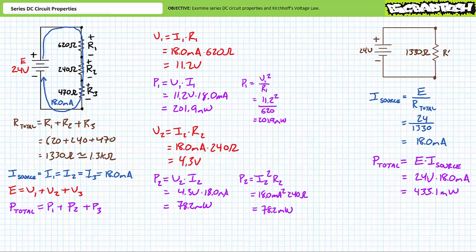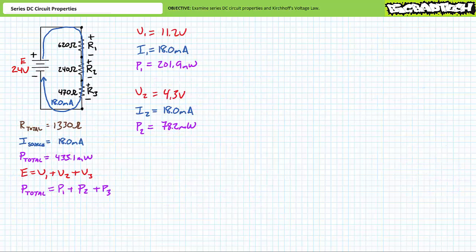As we predicted, the voltage dropped across the largest resistor R1 is indeed larger than the voltage dropped across the smaller resistor R2. Similarly, the power dissipated by the larger resistor R1 is indeed larger than the power dissipated by the smaller resistor R2. All that remains is to solve for these same properties for R3. Yes, we could use Ohm's law, however let's make use of Kirchhoff's voltage law, which states for any closed loop the summation of voltage rises will be equal to the summation of voltage drops, and power in always equals power out.